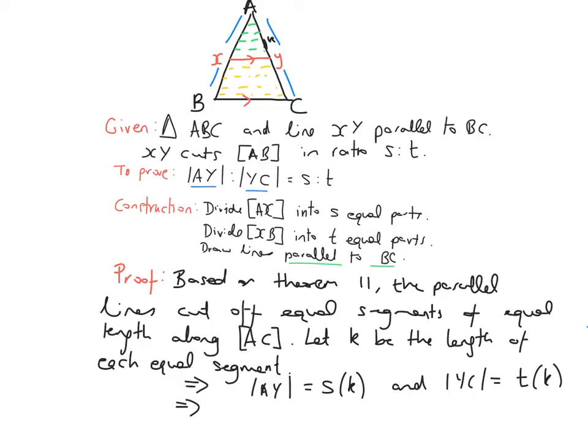Therefore, that means that the distance between AY compared to the distance between YC equals SK to TK, which can be simplified because K is on each side, as S compared to T.